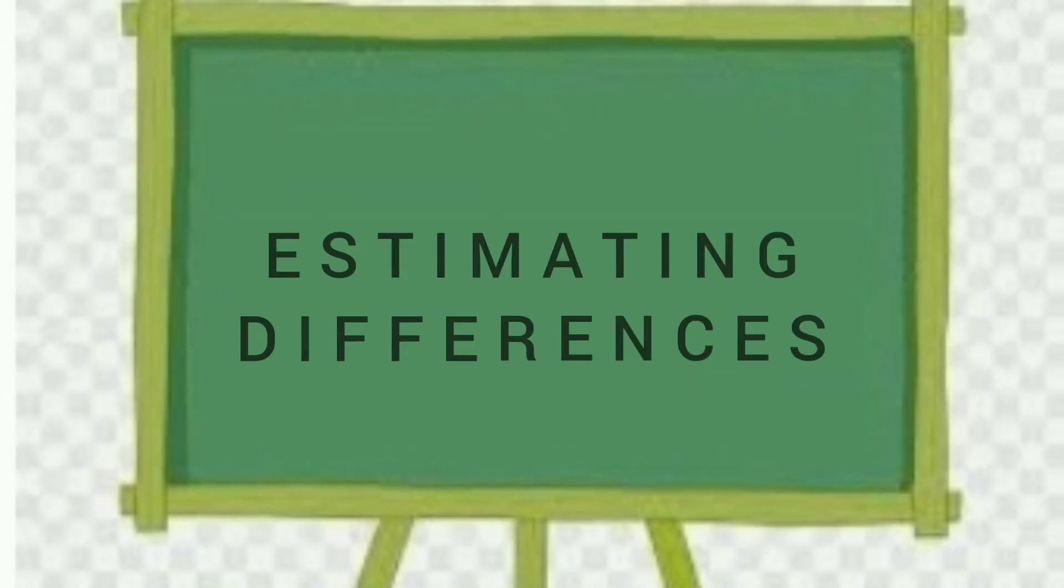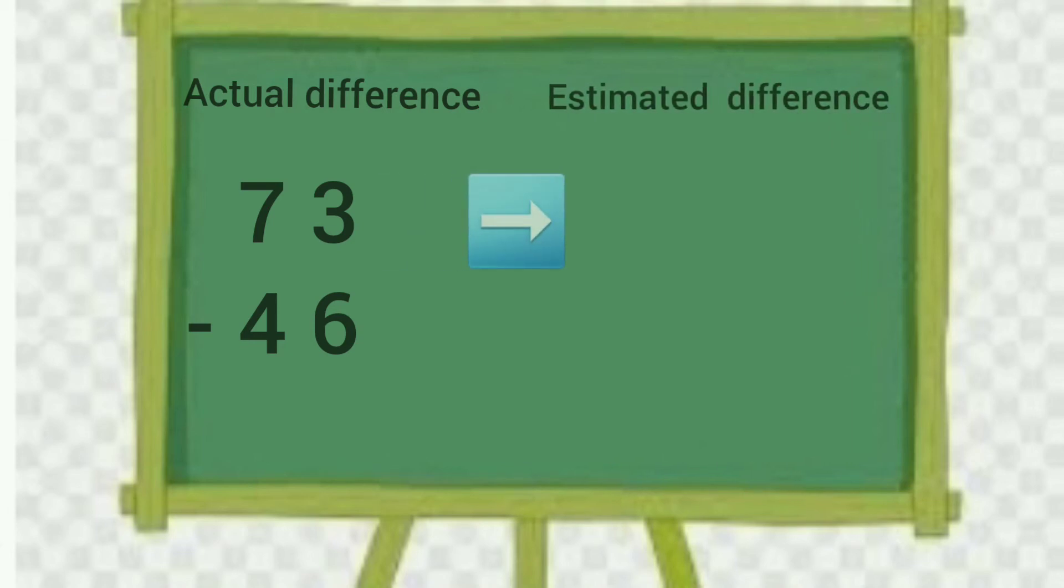Now we will learn estimating difference. Let us take an example, 73 minus 46. 73 will be rounded down to the nearest 10 and it will be 70. Similarly, 46 will be rounded up to nearest 10 and it will be 50.